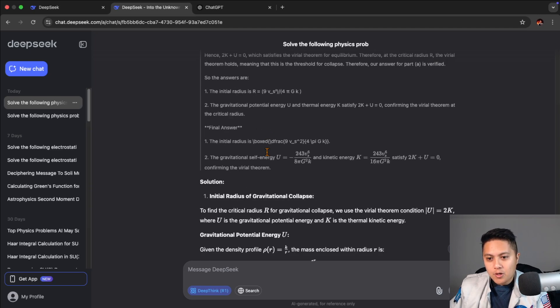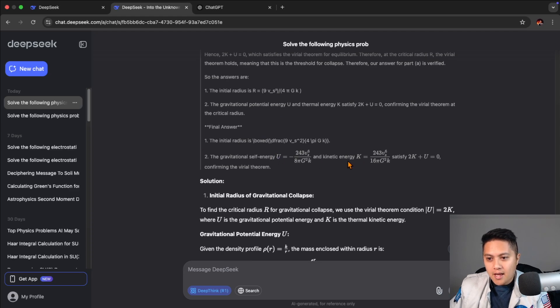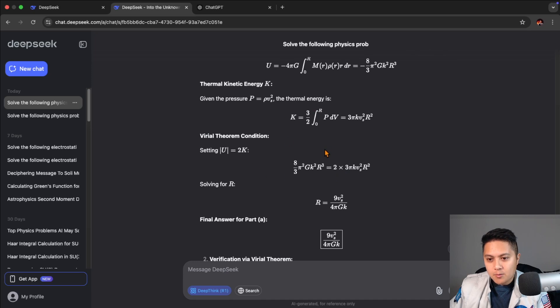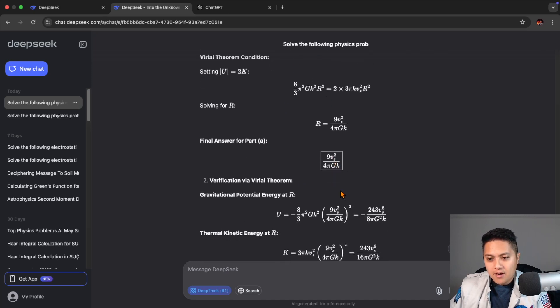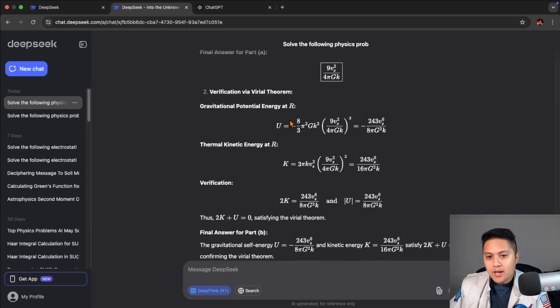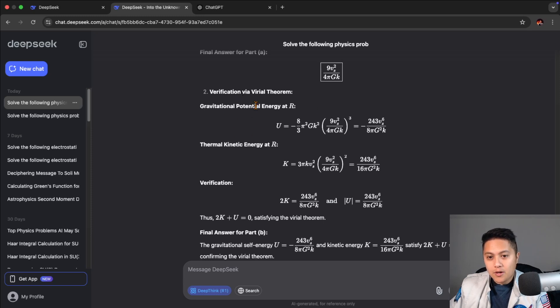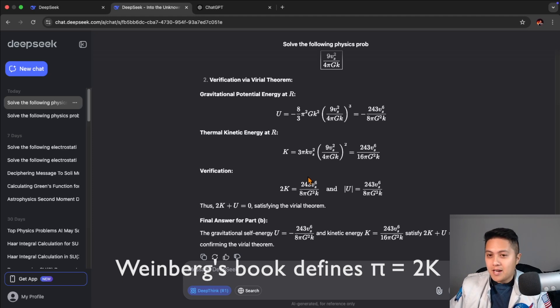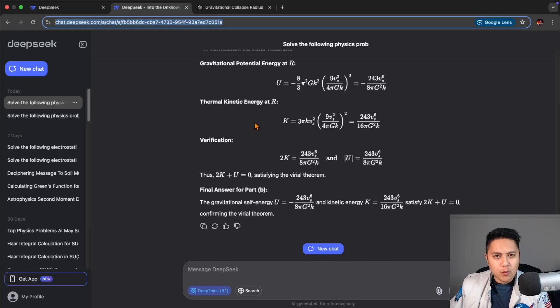And then it goes through the process of determining what the energies are at that radius. And so if we go past the chain of thought, and we go down to the solution here and its final expression, we see it gets the final radius correctly. And if we look at the validation of the Virial theorem, we can see indeed that it does satisfy the relationship that 2k plus u equals zero, where k is the kinetic, u is the potential energy. And so they get the same exact expressions that I got. And yeah, it completely got it.